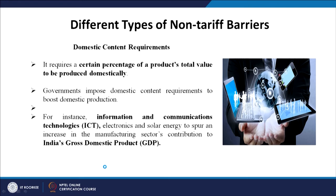Domestic content requirement requires a certain percentage of a product's total value to be produced domestically. Governments impose domestic content requirements to boost domestic production, giving a form of protectionism to local players. For instance, in information and communication technology (ICT), electronics, and solar energy, the government wants domestic content requirements to spur an increase in the manufacturing sector's contribution to India's GDP.